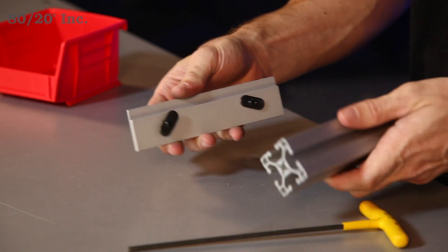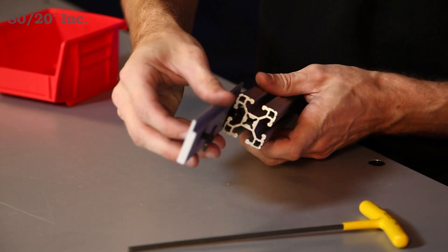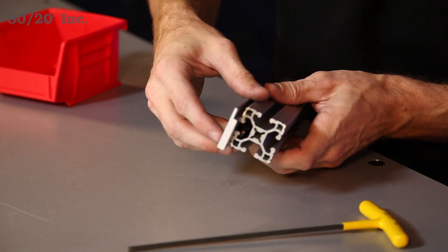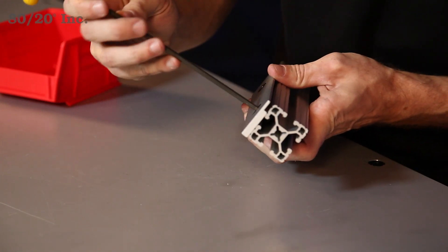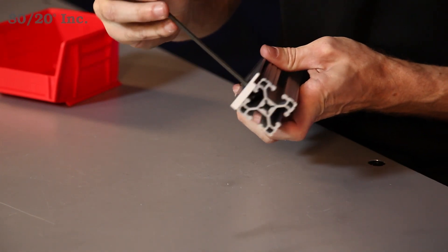Now from there, we'll take our profile and we'll slide the hanger right into the open T-slide. We'll position it where we want it, grab our wrench, and we'll tighten down those bolts.